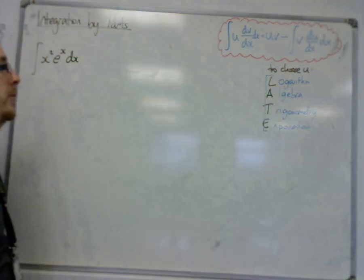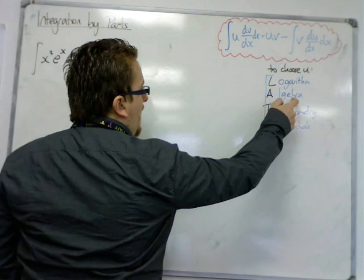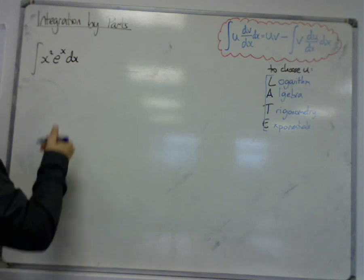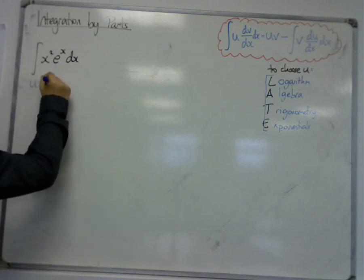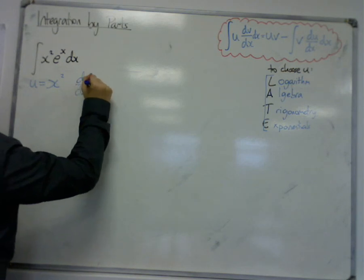So we don't have any logarithms, so we can't pick u to be any logs, but we do have some algebra, so that's the x squared bit. So what we're going to do is we're going to set out that u is going to have to be the x squared, and the dv by dx will have to be the e to the x.